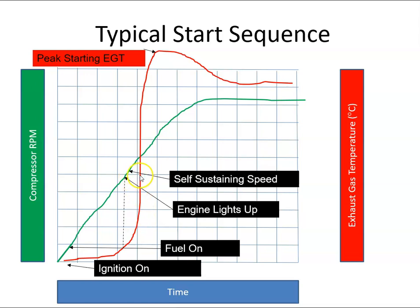When light-up occurs, air is flowing through the compressor and out through the turbine. This warm air is turning the turbines, and the turbines are now turning the compressors. The compressors get to a speed which we call self-sustaining speed — in other words, the engine is turning fast enough to supply air and fuel into the combustion can without needing the starter motor anymore.